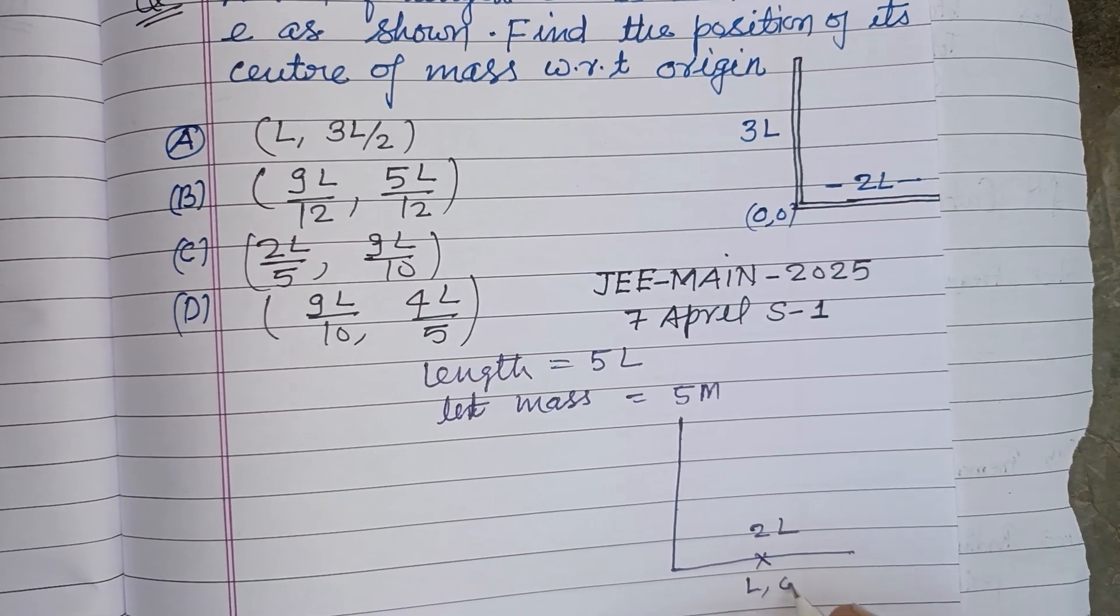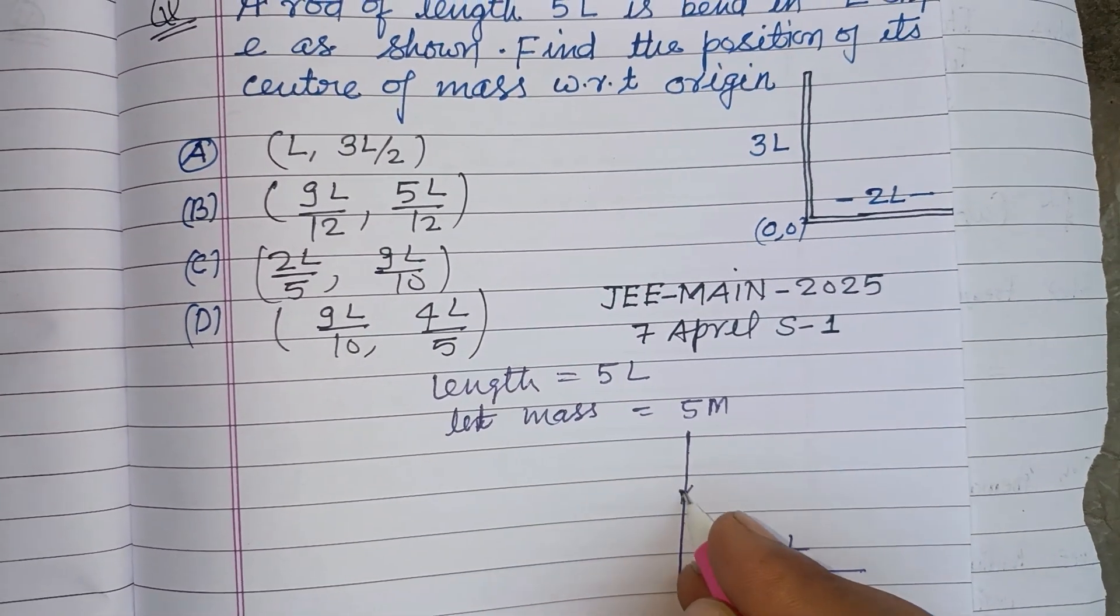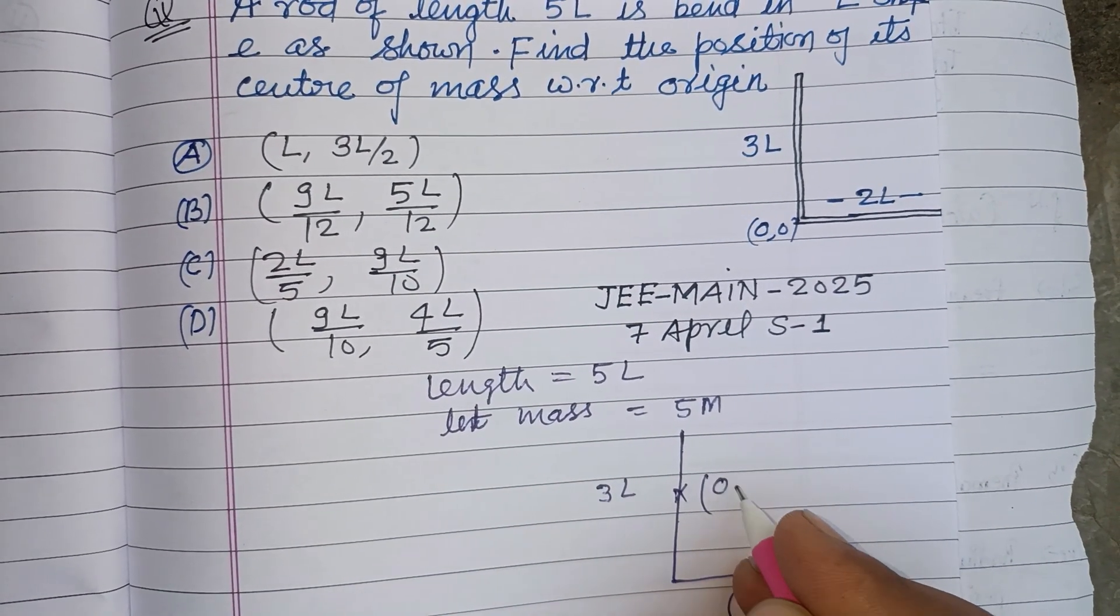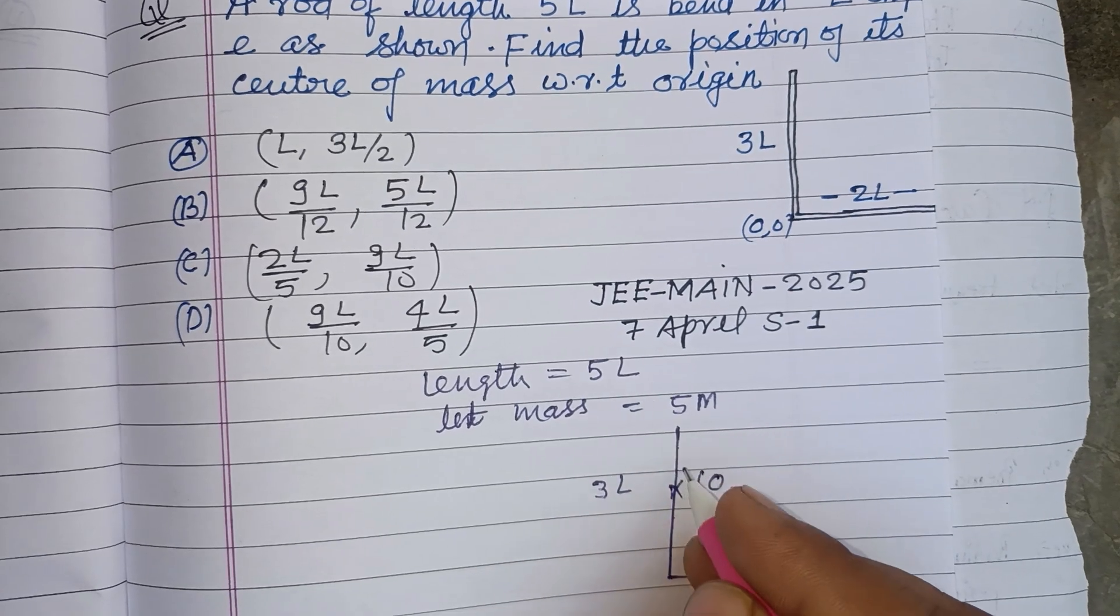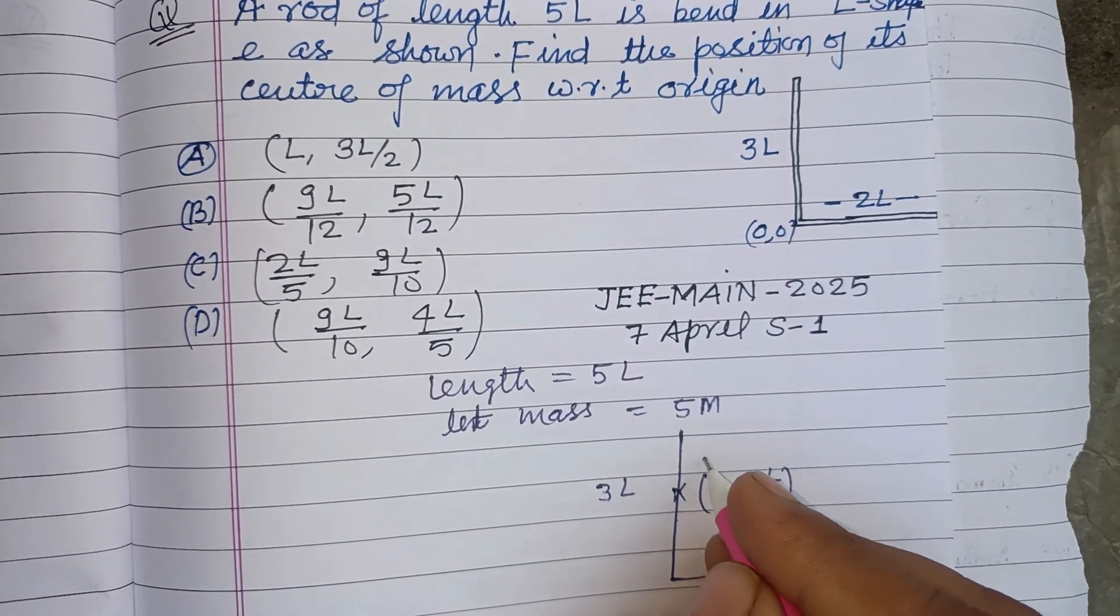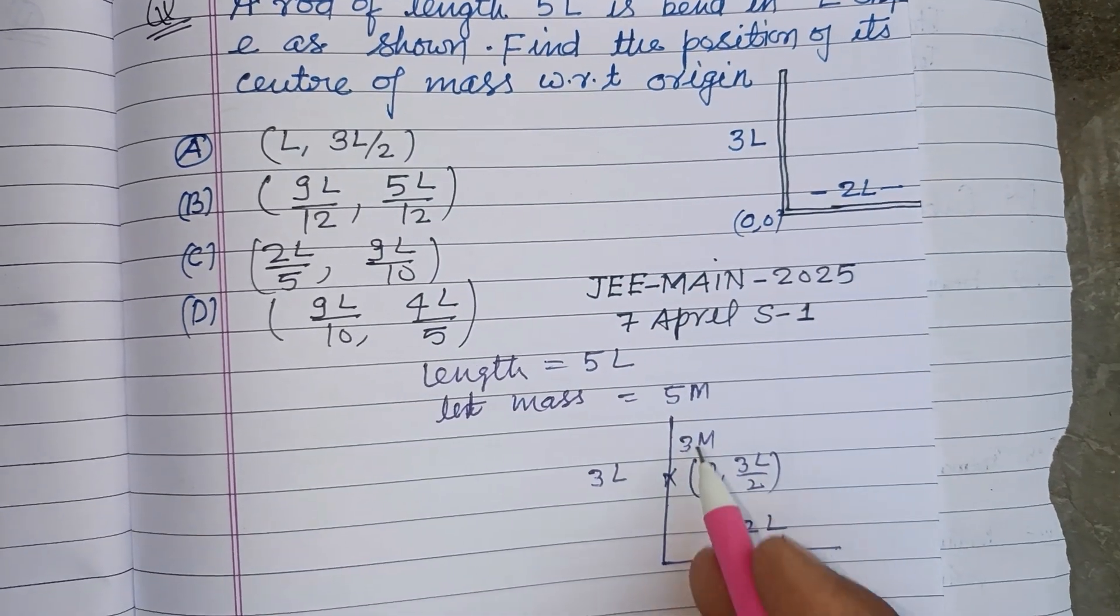And this is the length 3L, its center of mass at 0 comma 3L by 2 because it is on y-axis. Here mass is 3M because it is divided in two parts, 3L and 2L.